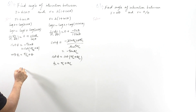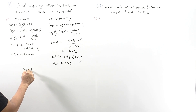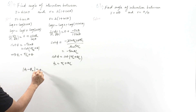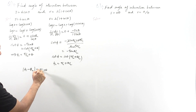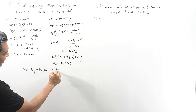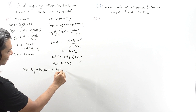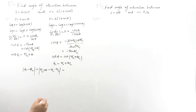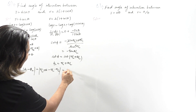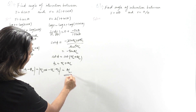The angle of intersection is φ₁ - φ₂ = (π/2 + θ) - (π/2 + θ/2). The π/2 terms cancel, leaving θ - θ/2 = θ/2. So the angle of intersection is θ/2.